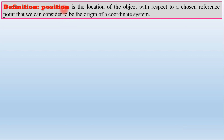The definition of position is the location of the object with respect to a chosen reference point that we can consider to be the origin of the coordinate system. The position is the location of the object, and the reference point is the reference point.